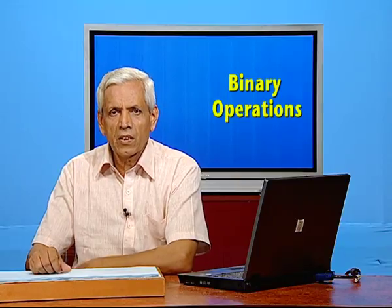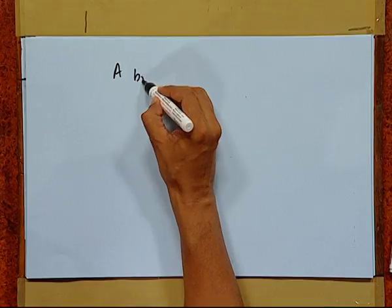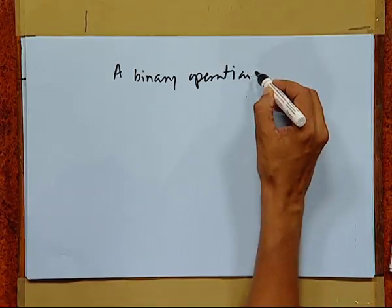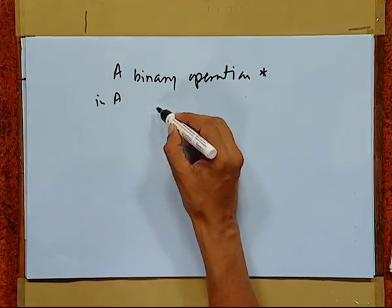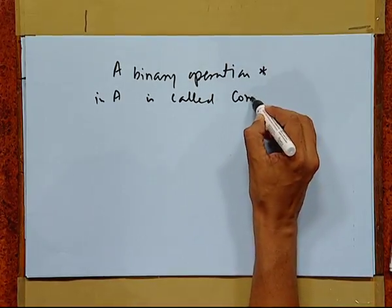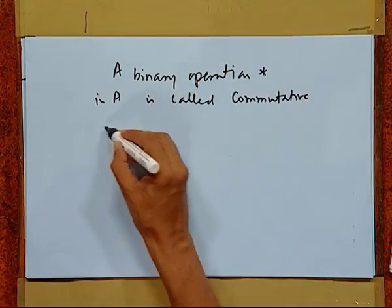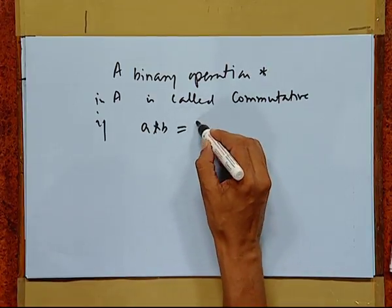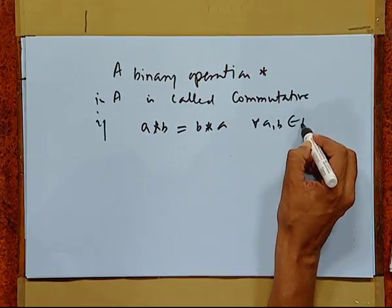Our usual operations — addition and multiplication — follow both the commutative and associative laws. We have A plus B equals B plus A, as well as AB equals BA. But A minus B is not equal to B minus A, and A upon B is not equal to B upon A.